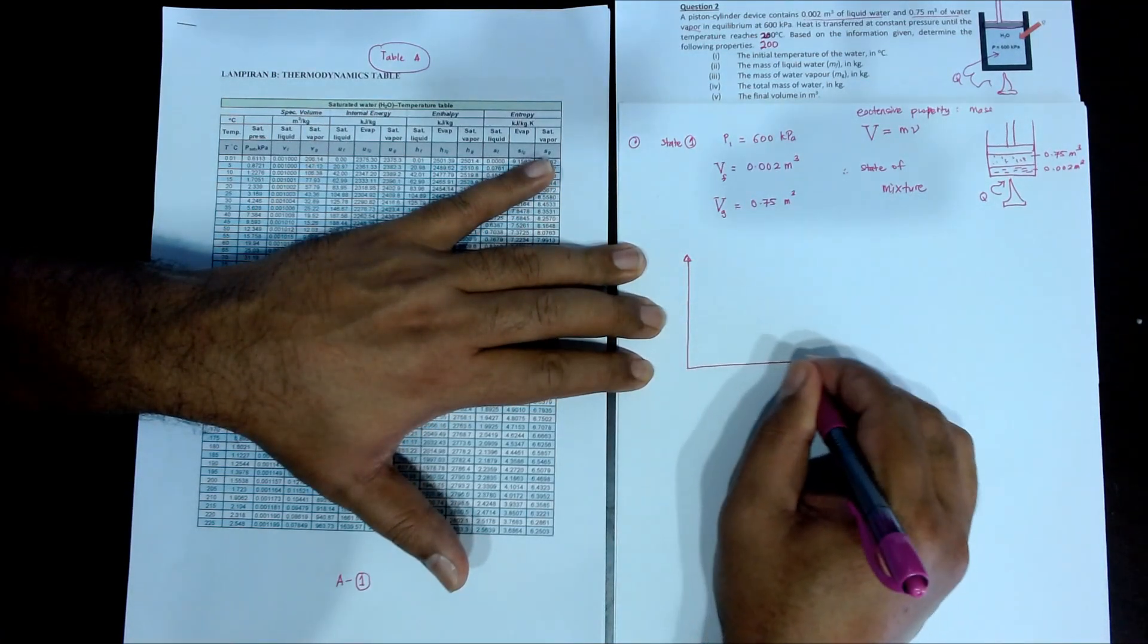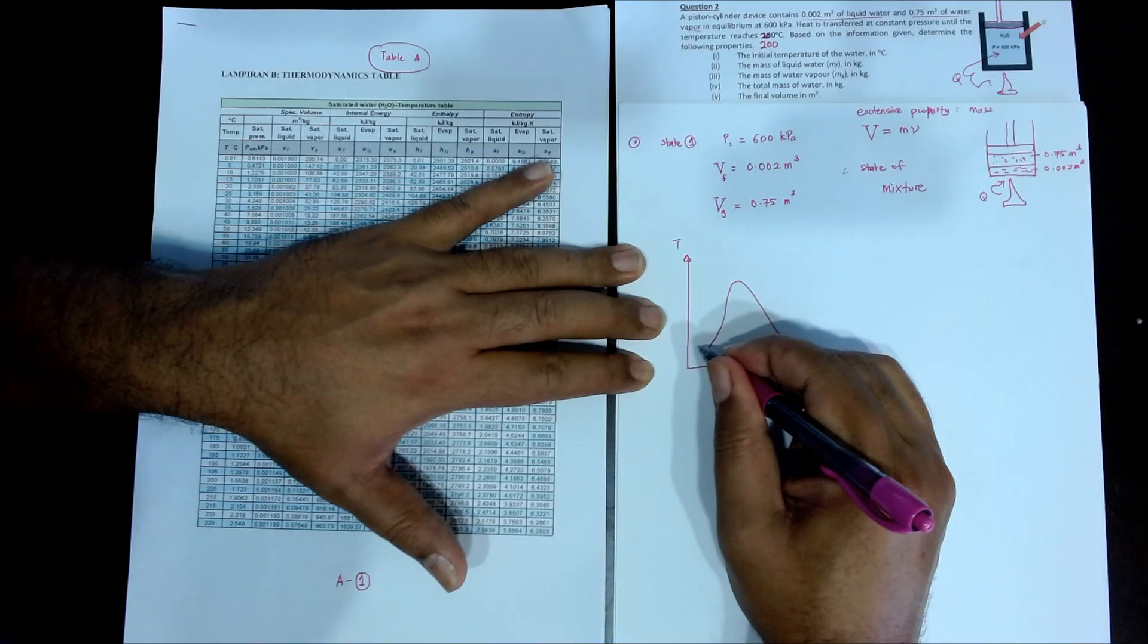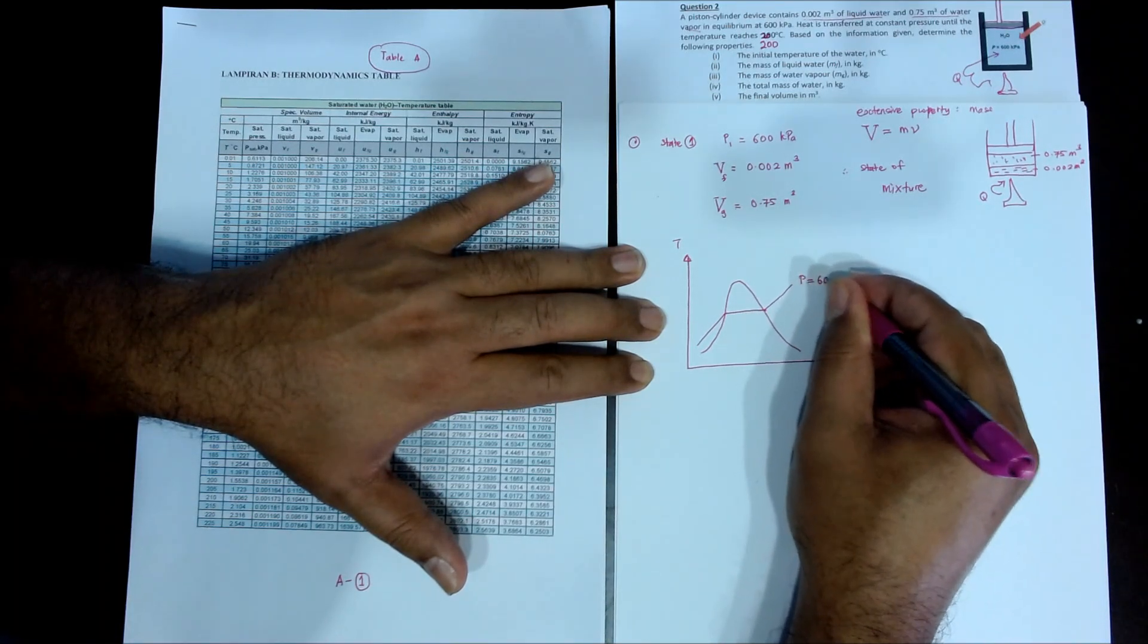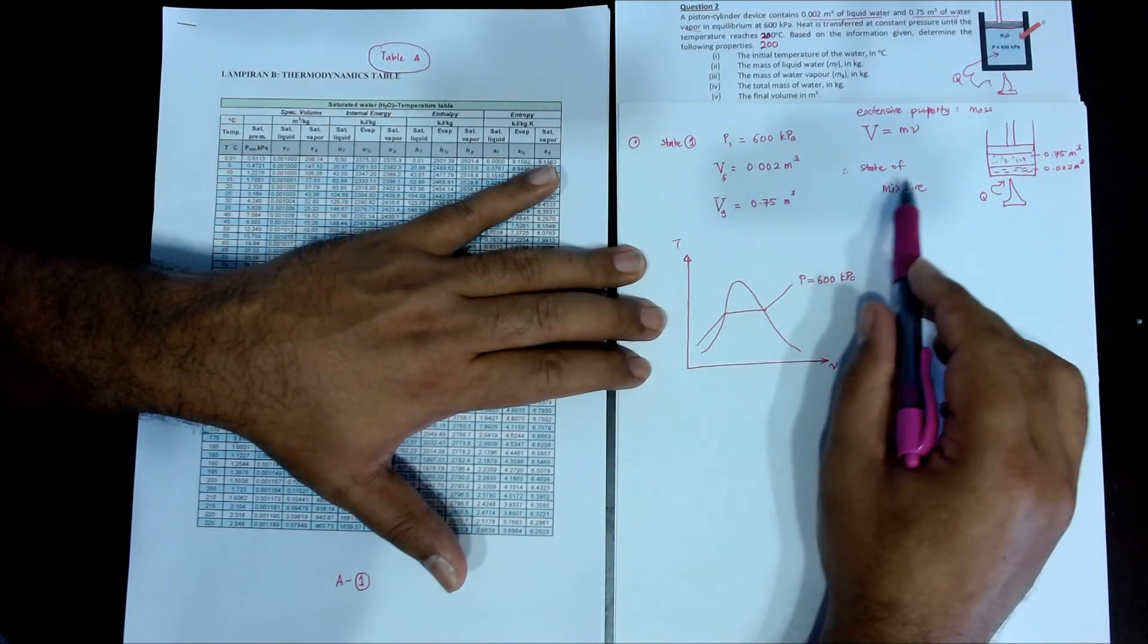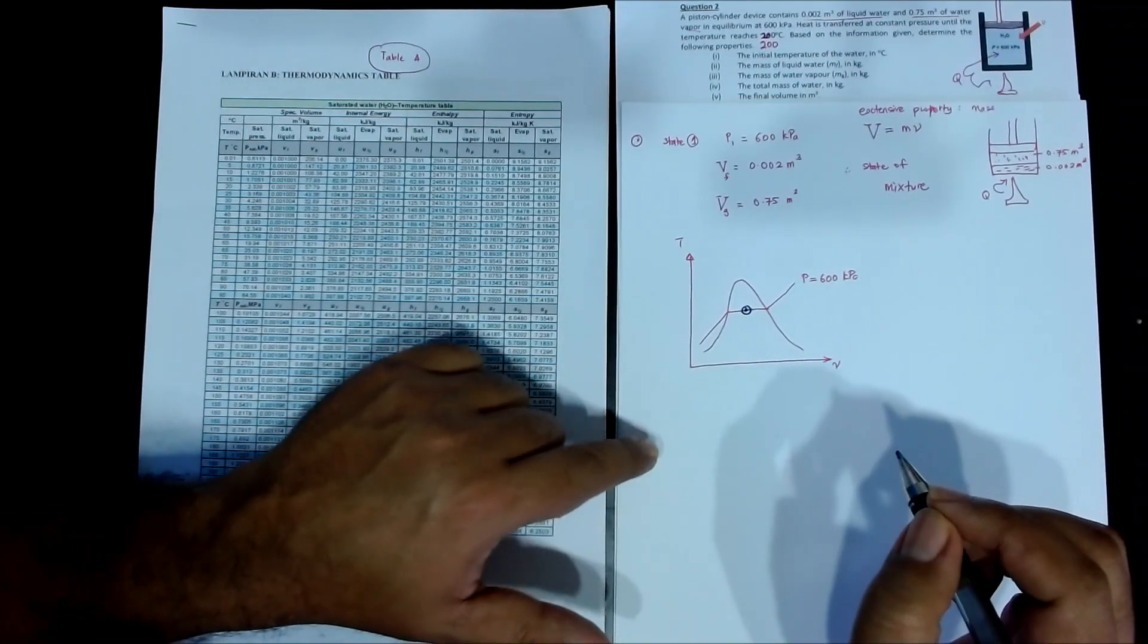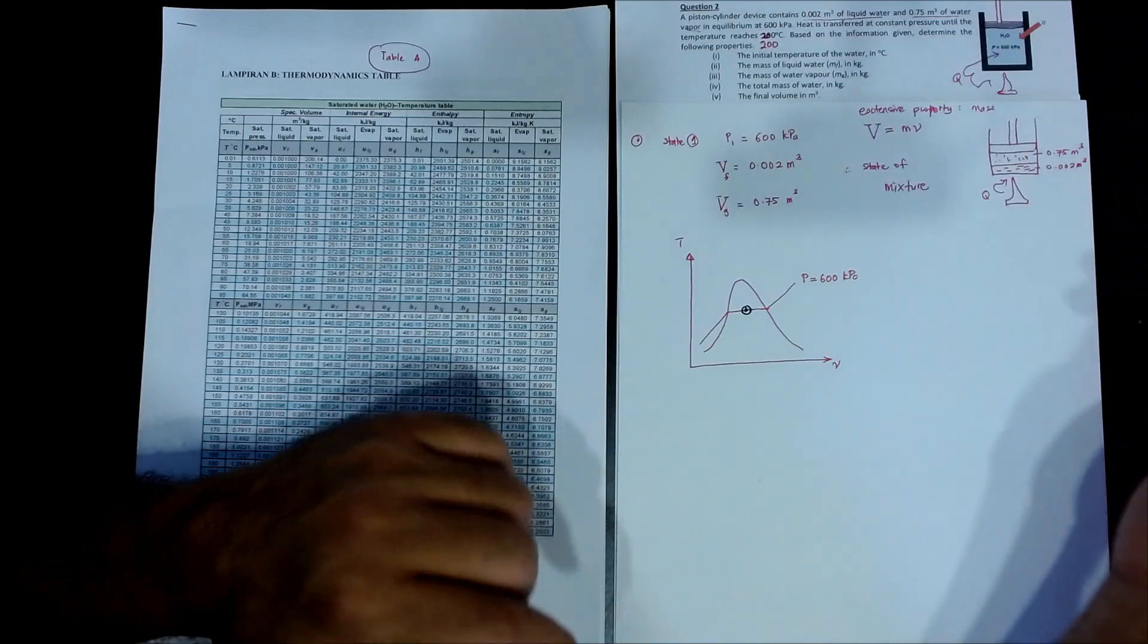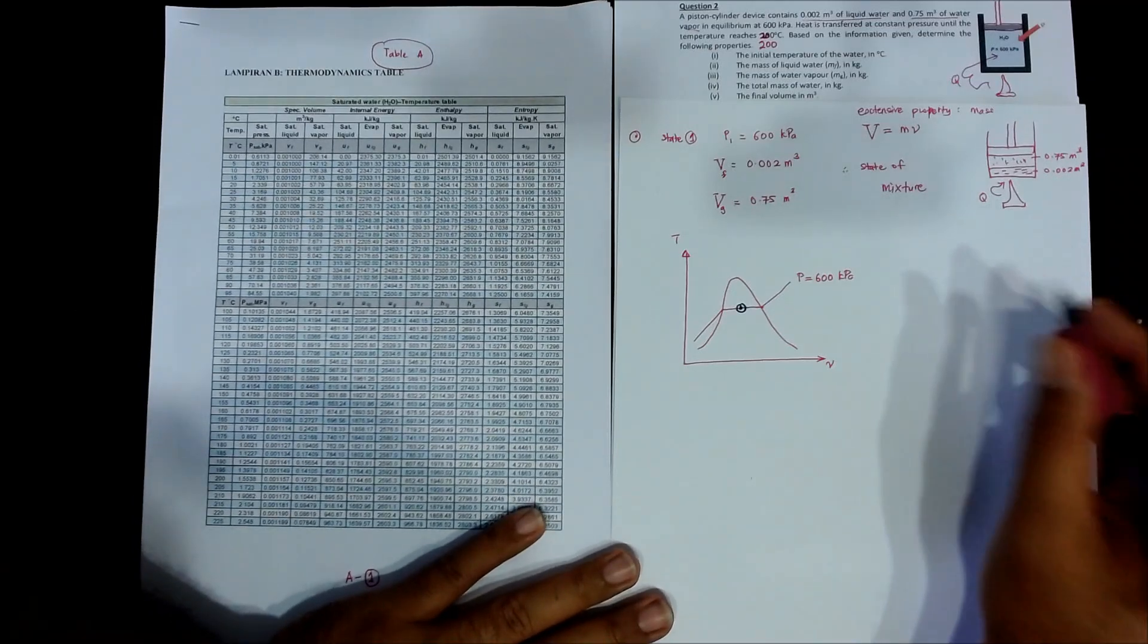Remember that we learned before, T, V. So these are the straight line for P equals to 600 kilopascal. This is for line for pressure. So because the first state, state 1, is a mixture, so we can show it here. So there will be value of X later on, but for this problem we don't have to find X because the question didn't ask you to find X. So don't worry, we are still in the initial state of learning the using of the thermodynamics table.